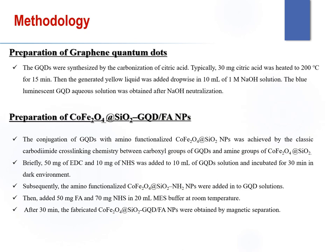The GQDs were synthesized by the carbonization of citric acid. Typically, the citric acid was heated to 200°C for 20 minutes. Then, the generated yellow liquid was added dropwise to 10 ml of 0.5 molar sodium hydroxide solution. The blue luminescent GQD aqueous solution was obtained after neutralization.